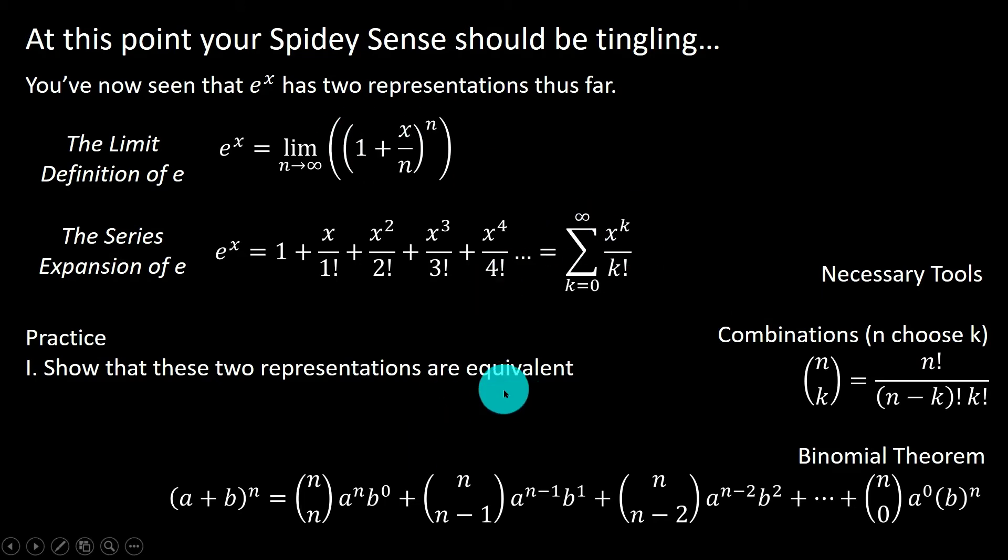Before you embark on your adventure here, I have some necessary tools just to quick review for you. You are going to need the combinations formula, commonly called n choose k, where that's n factorial over n minus k factorial times k factorial.